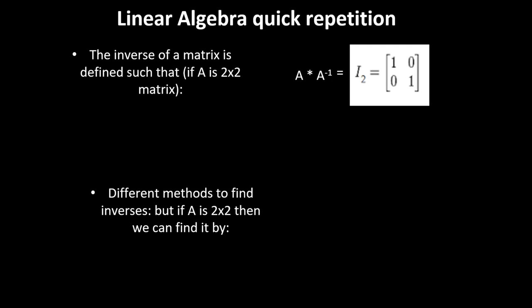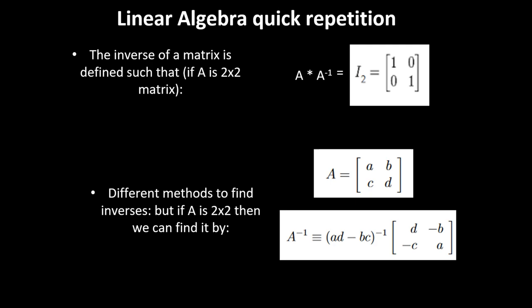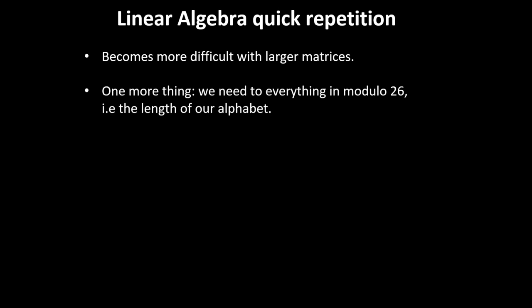There are different methods to find inverses, but if A is 2 by 2, we can find it by this formula. This part here is called the determinant, and this part is called the adjoint. The inverse is found by multiplying the determinant by the adjoint. This is just the simple 2 by 2 case. It becomes more difficult with larger matrices, but the same principle applies.